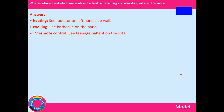TV remote: infrared covers a reasonably wide band of frequencies. The lower-frequency end can be used safely for remote control — you won't feel those frequencies, they don't have a high heating effect, and you can send messages between your television and remote. Put your hand in front and it will do you no harm.